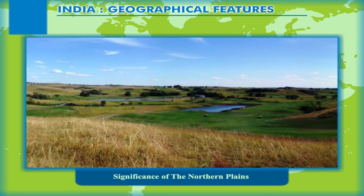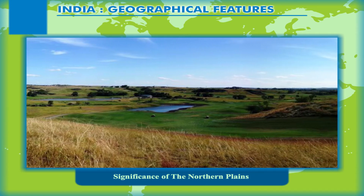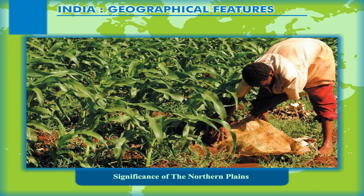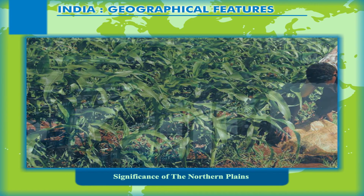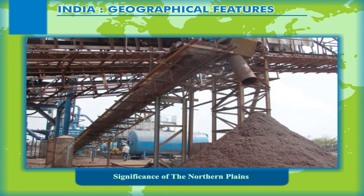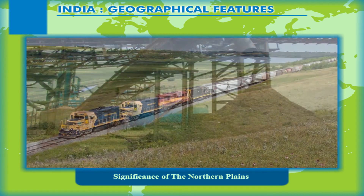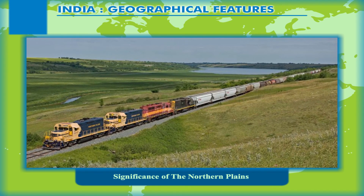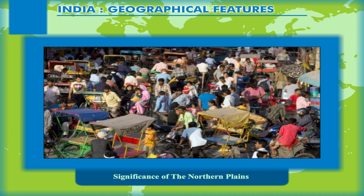The Northern Plains are made up of fertile alluvial soil brought down by the rivers, making them suitable for agricultural activities. The flat terrain supports the growth of industries and a well-developed network of roads and railways. These Northern Plains are densely populated and have proved favourable for the growth of civilizations.